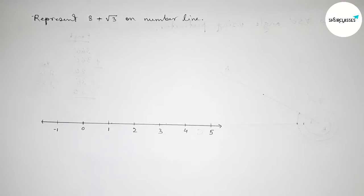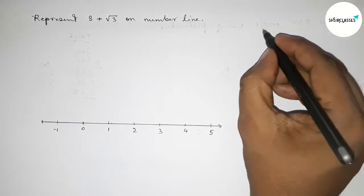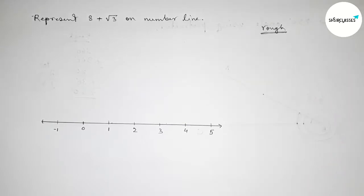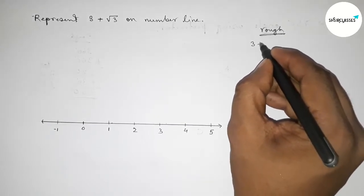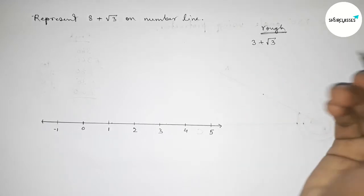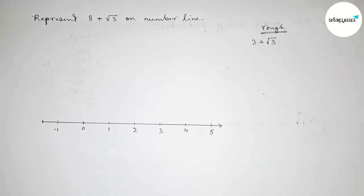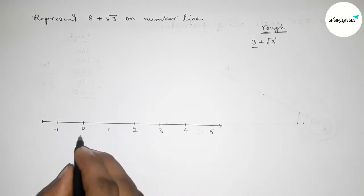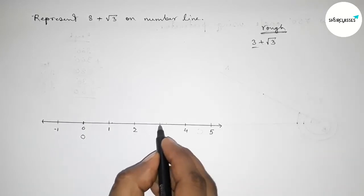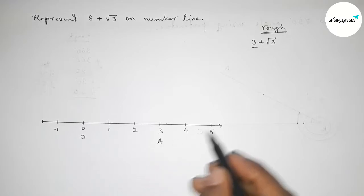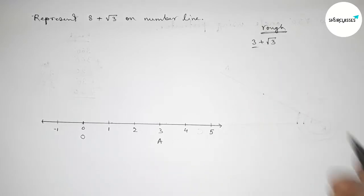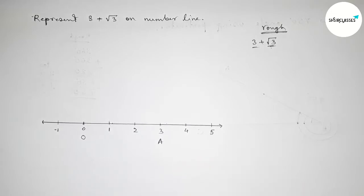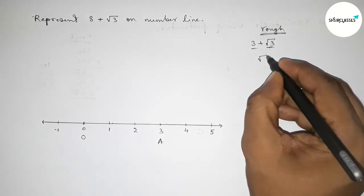Now roughly discussing some important back-calculation here. We have to represent 3 plus root 3 on the number line. So the three-unit length goes from zero to three — taking point O and point A, so OA equals three units. Now we have to represent root 3.